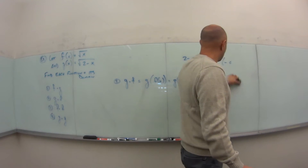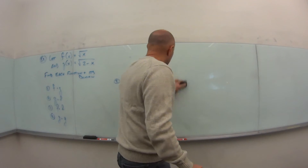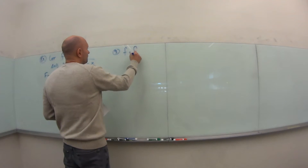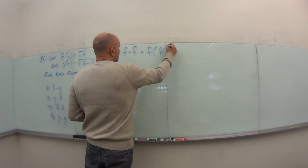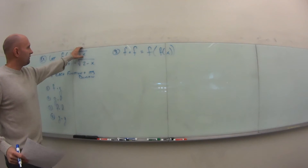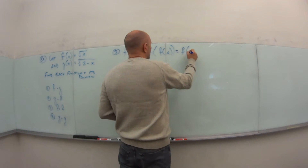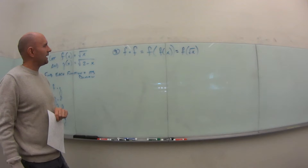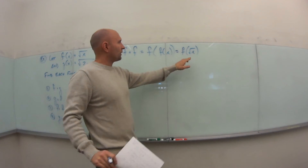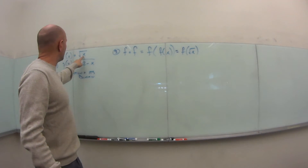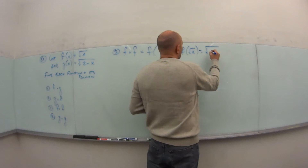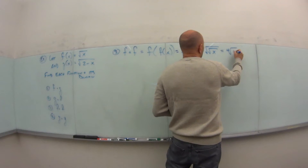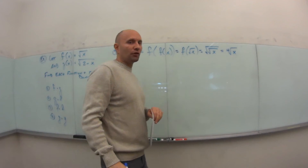For number 3, f∘f means f of f(x) — we're plugging the f function back into itself. So f(√x) means we plug √x into f anywhere we have an x, giving √(√x). Just like in problem 1, we can simplify this to the fourth root of x. That's our composite function f∘f.